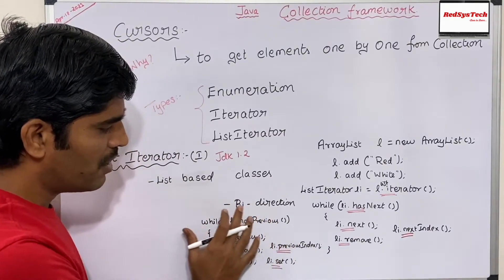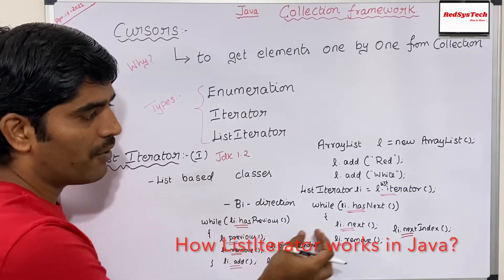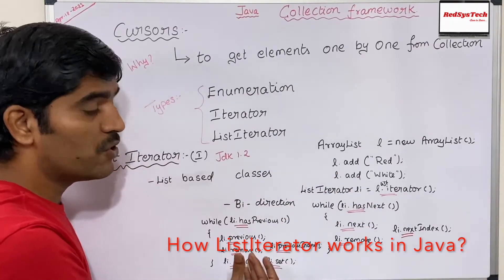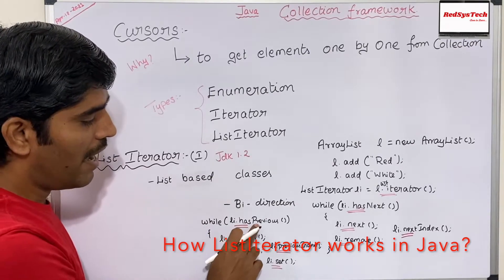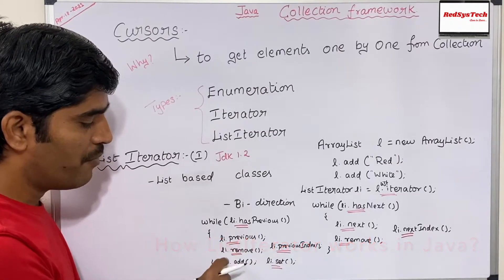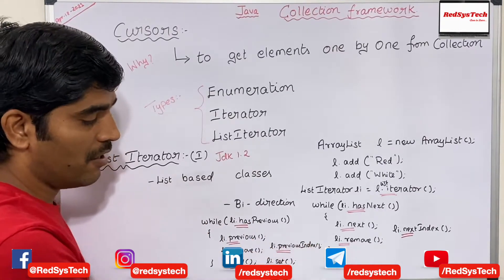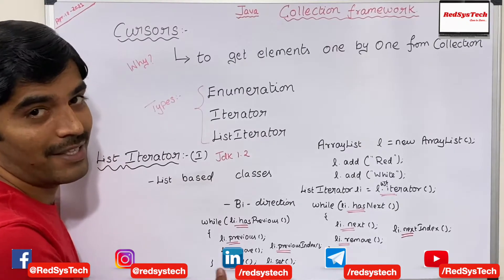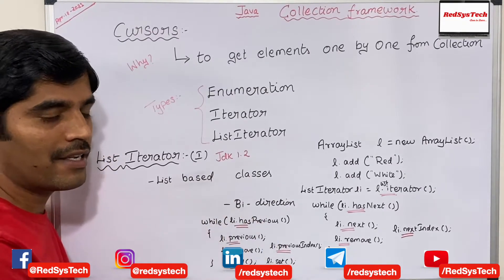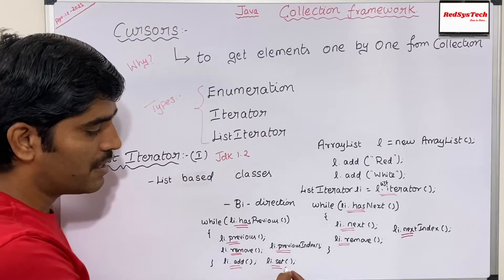Similarly, they have introduced methods specifically for backward direction. If I want to navigate backwards, I can use LL dot hasPrevious. They have two terms: next and previous. Next means navigating in the forward direction; previous means navigating in the reverse direction. I can use LL dot hasPrevious, LL dot previous to get the previous element, remove, and LL dot previousIndex to get the index of the previous element. They also have add to add a new object and set to replace an existing object.